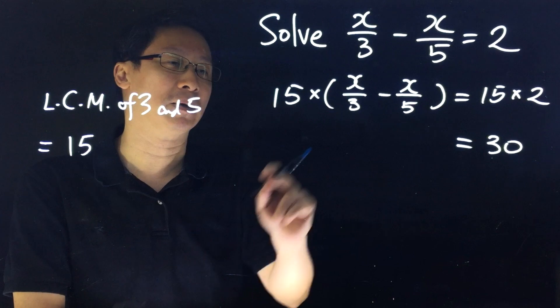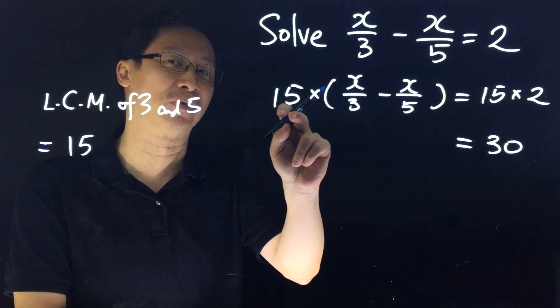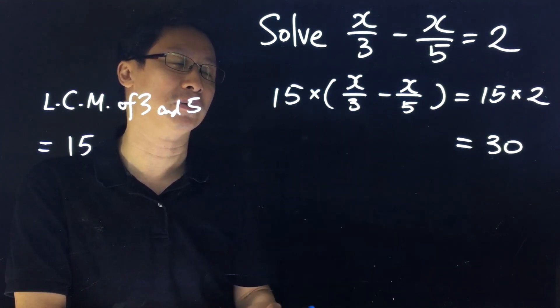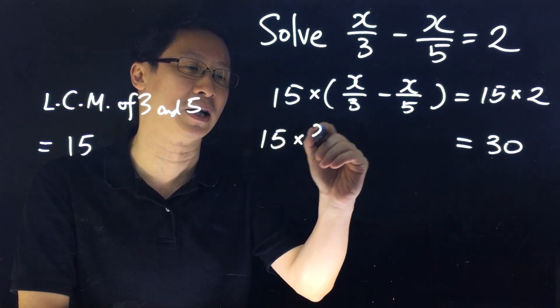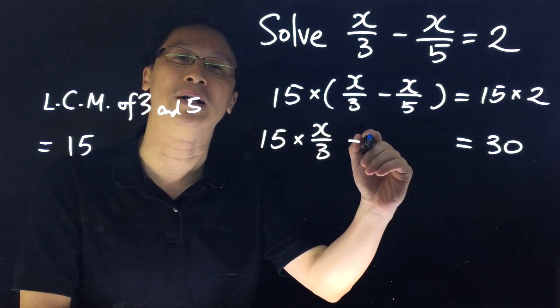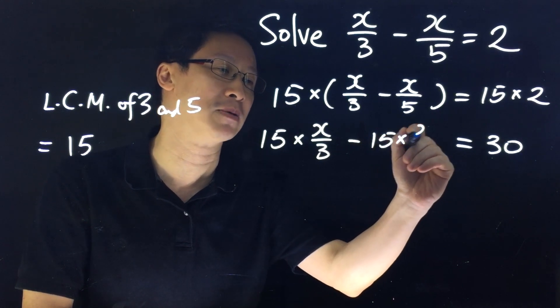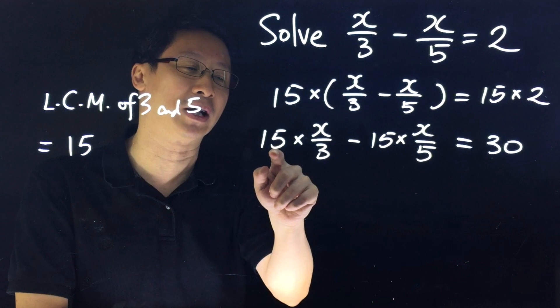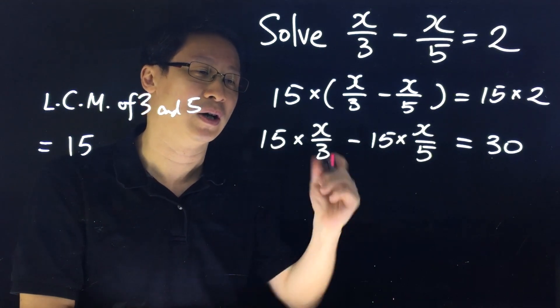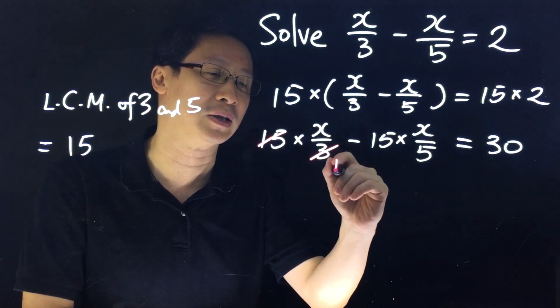We remove the bracket by distributing 15 into the bracket. That means we have 15×(x/3) - 15×(x/5). Now we can cancel out the numbers.